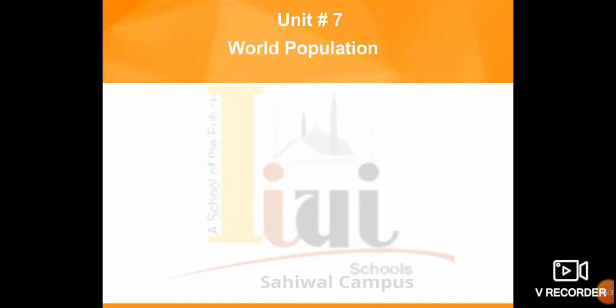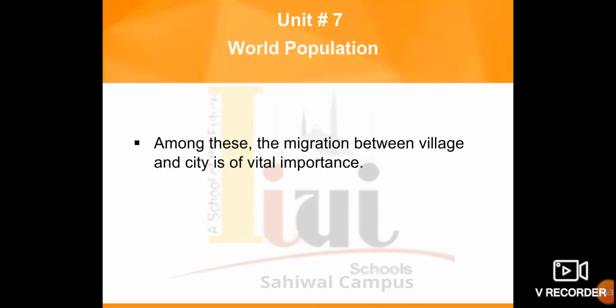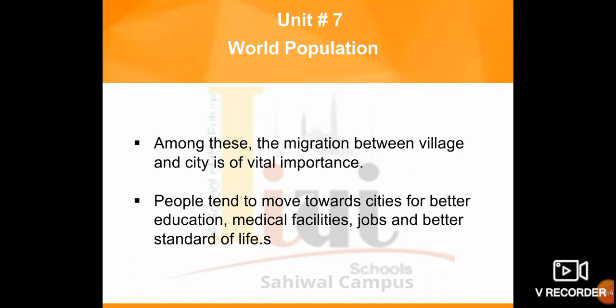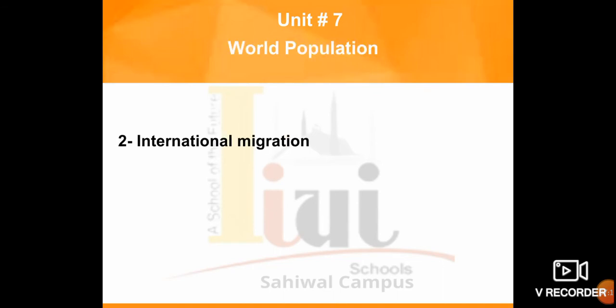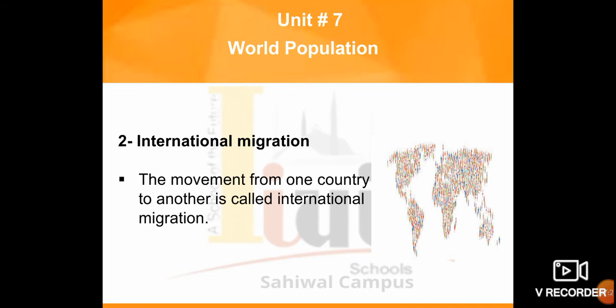Among these migration types, movement between village and city is of vital importance. People tend to move towards cities for better education, medical facilities, jobs, and better standards of life. The second type — international migration — is the movement from one country to another.